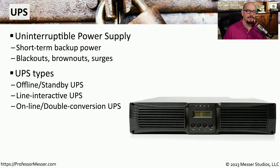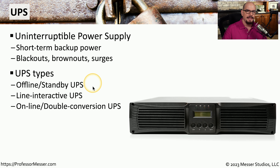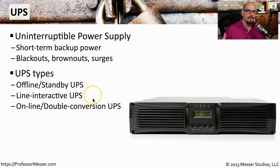A UPS commonly has batteries or some other power source inside that allows us to keep up and running even when the main power is no longer operational. It can get us through blackouts, brownouts — a drop in voltage — or surges, an excessive amount of voltage. There are different types of UPSs depending on your requirements and budget. Lower-end UPSs tend to be offline or standby UPSs, which run on main power but switch to battery backup when main power fails. A line-interactive UPS can slowly increase voltage if you see a drop on your main power line, which is especially helpful in areas prone to brownouts.